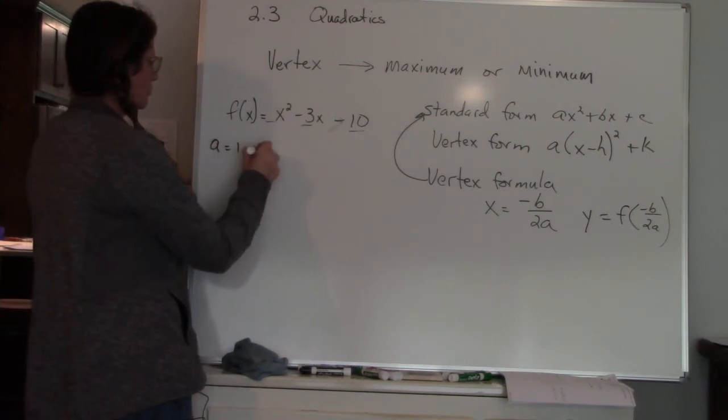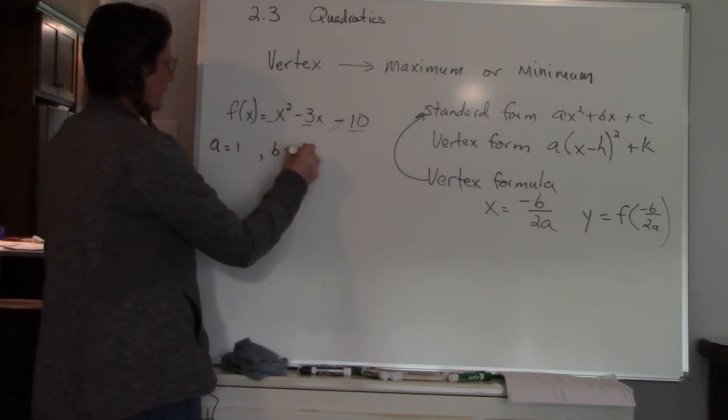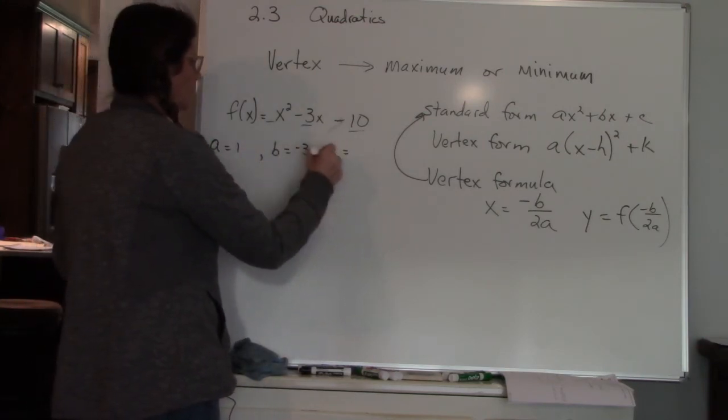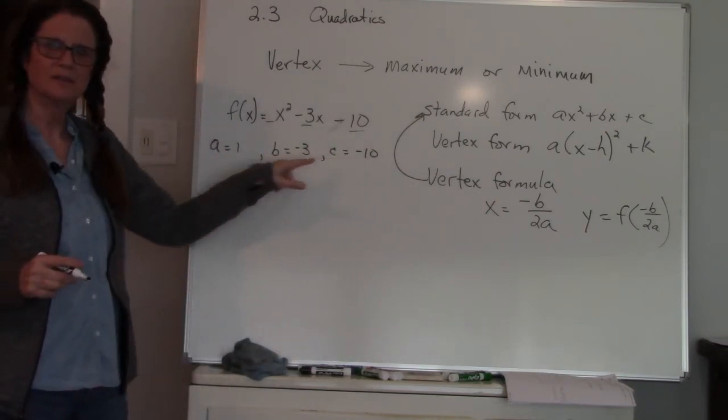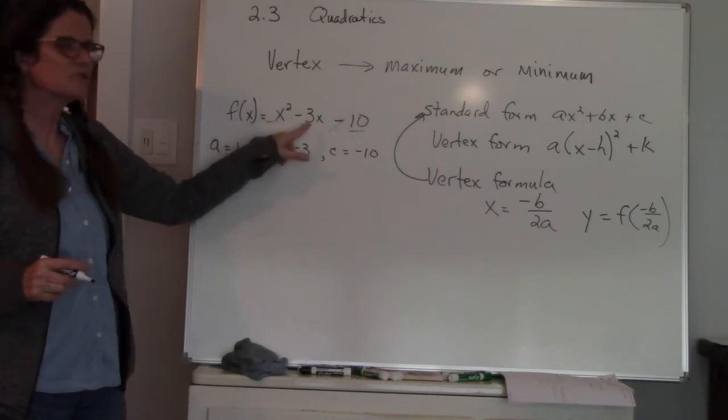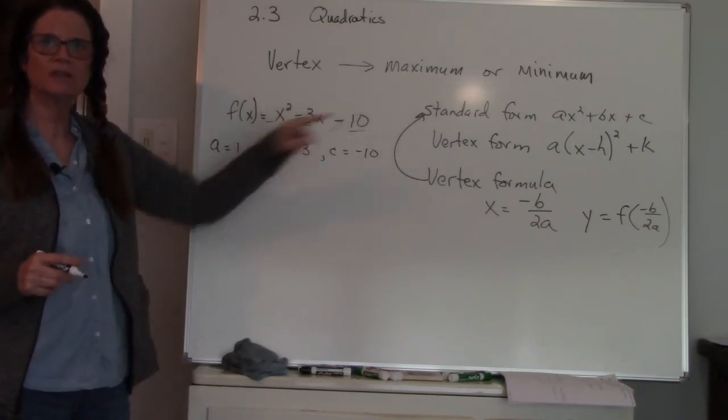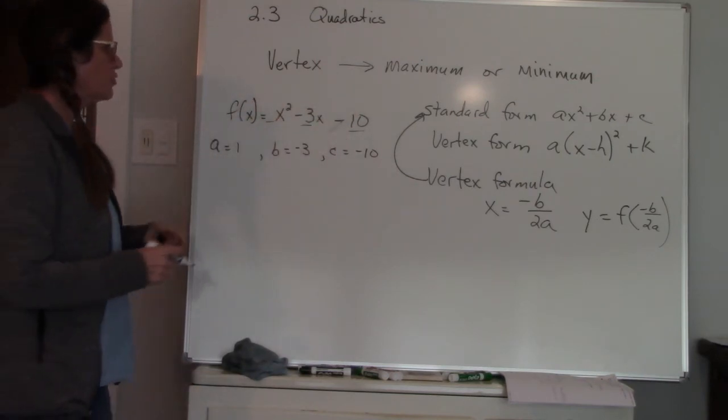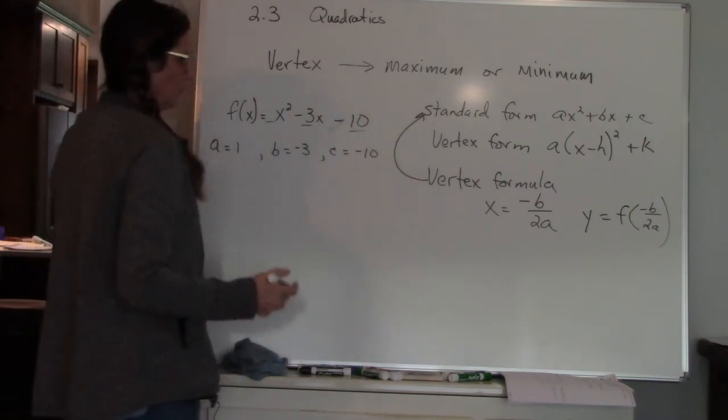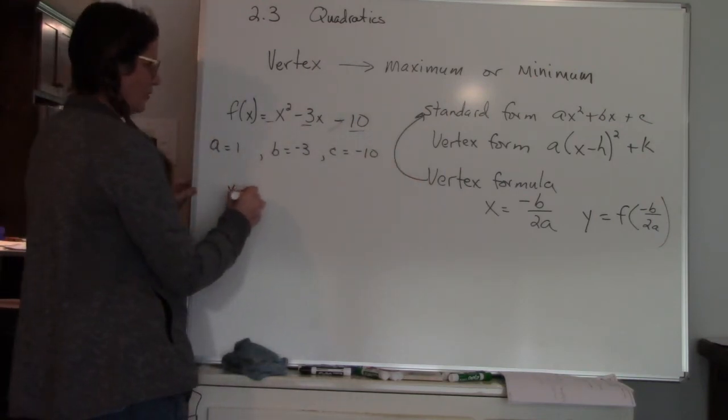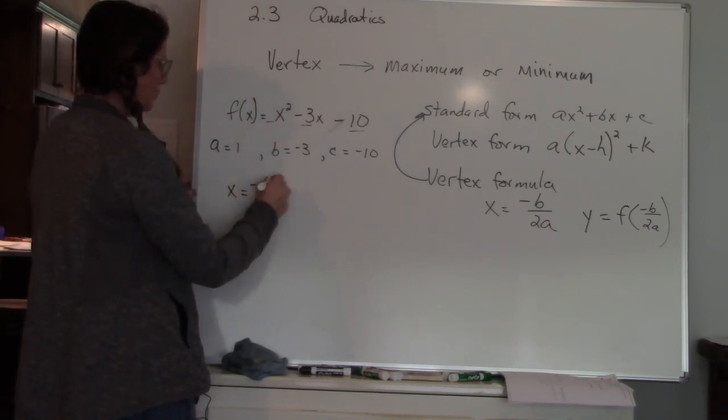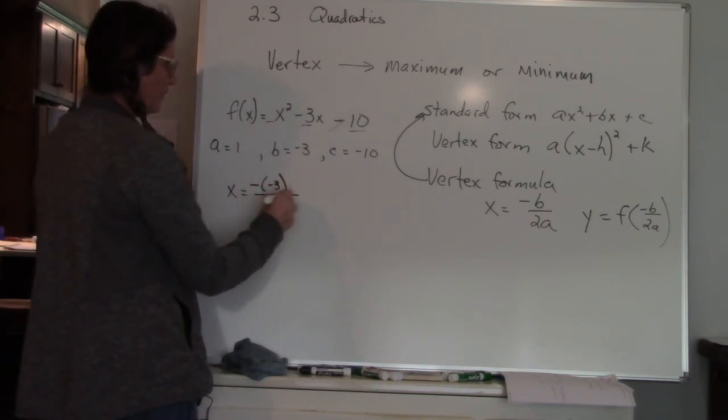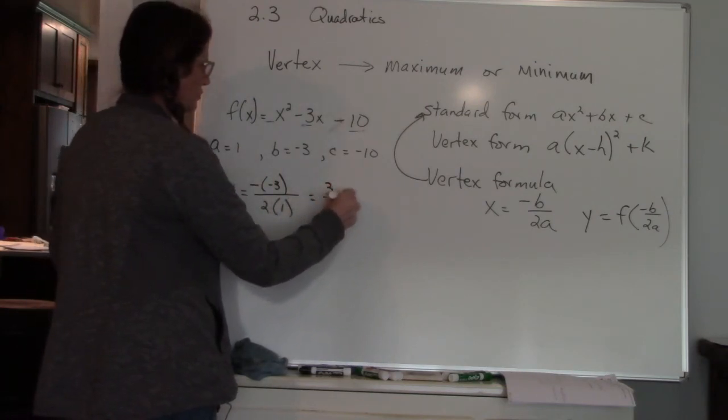So I'm going to write this out so you can see it, because what I want you to notice is there's no x's in here—all we're using is the coefficients, the number in front of the variables. So when I use the vertex formula to get my x value, I'm going to do negative b, so negative and b is negative 3, divided by 2 times a is 1. So I have 3 over 2.